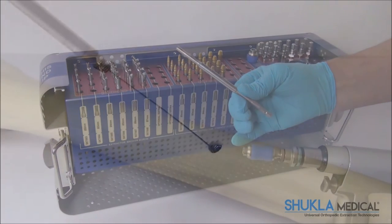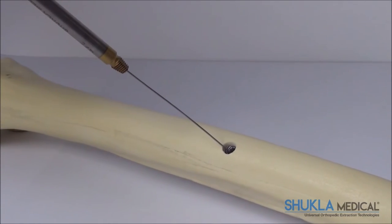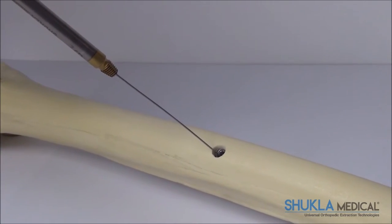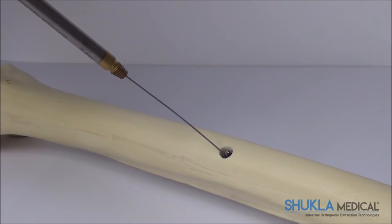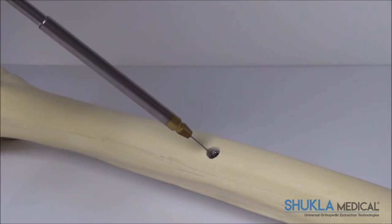Once the screw has been removed, the screw and extractor are simply discarded. The extractors are cannulated, allowing the surgeon to follow a K-wire down to a screw embedded in the bone, or deep in soft tissue.